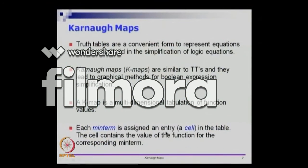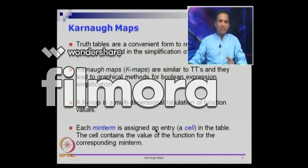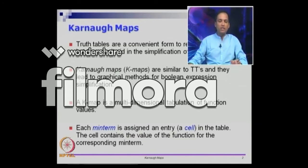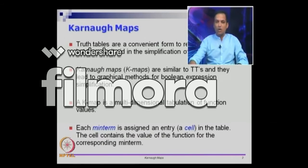The way a K-map works is: for each min term, we are going to assign an entry or a cell in the table. We are going to build something called a K-map table, and for each min term we will assign one location. So if you have three inputs, the truth table has 8 different combinations, and the K-map will also have 8 different cells. The cells contain the information of the function for the corresponding min term — if a corresponding min term turns on, the function will turn on.